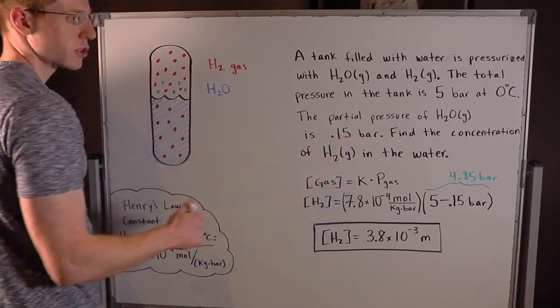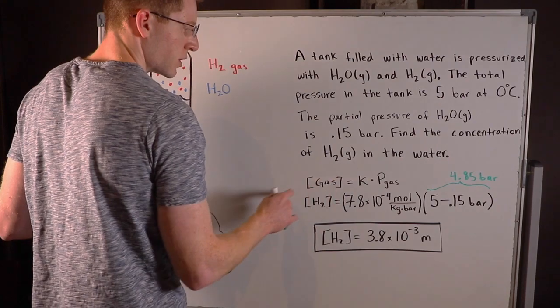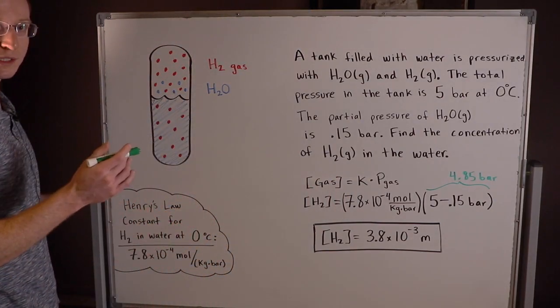You have to subtract out the partial pressure coming from water because we only want the partial pressure coming from H2. You can only do a Henry's Law equation for one gas at a time.